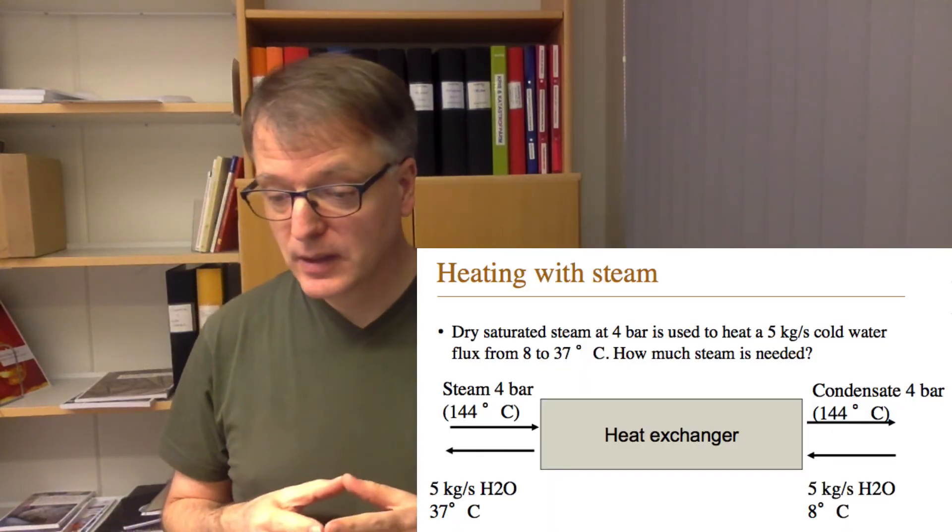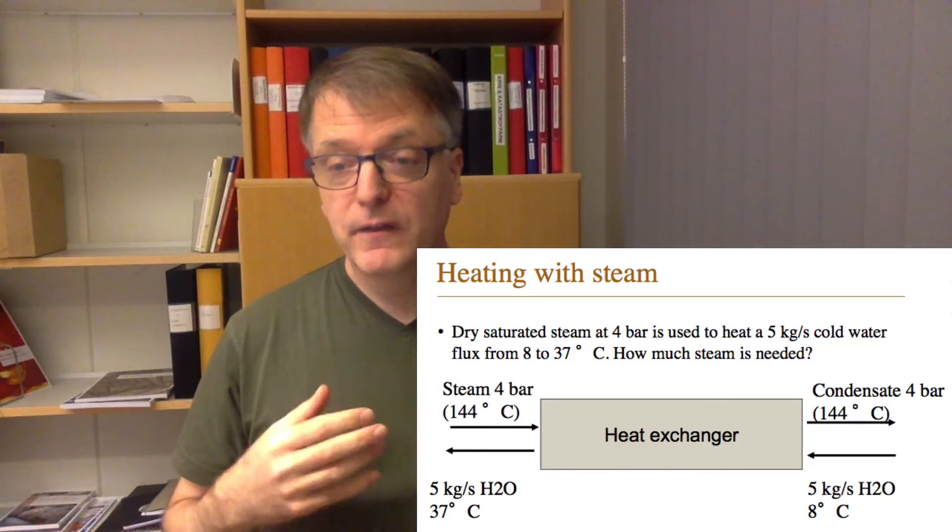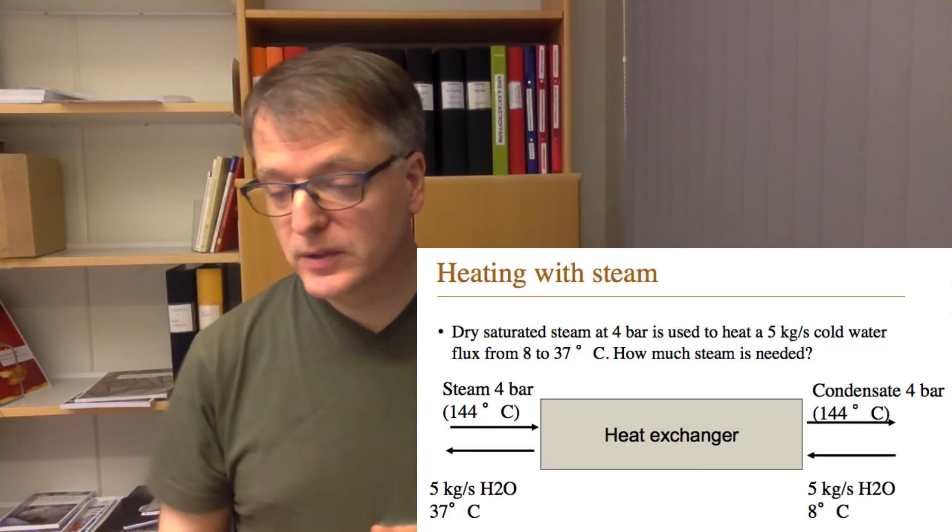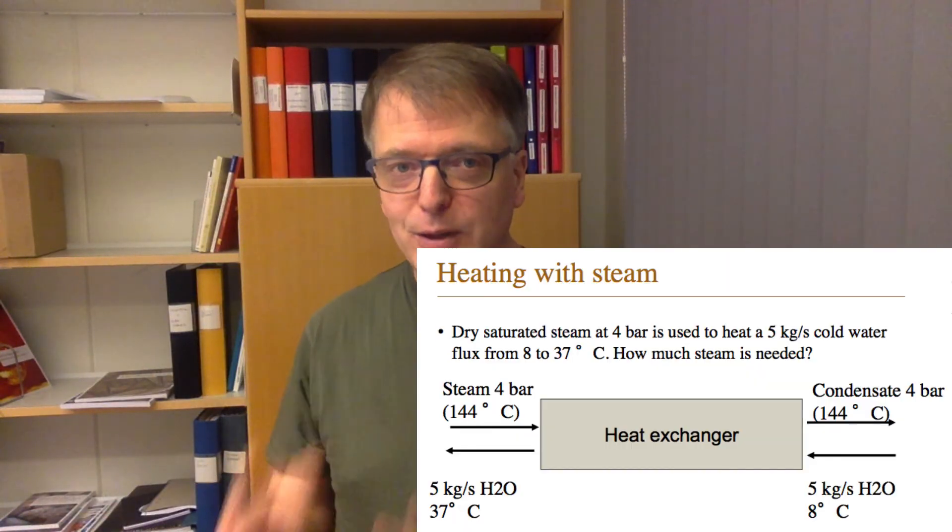Let's do a simple example. We have a heat exchanger where we have dry saturated steam at 4 bar which is used to heat 5 kilograms per second of cold water from 8 to 37 degrees. How much steam is needed? We will talk about heat exchangers later in the course, but we can actually solve the task without knowing anything about heat exchangers. Just looking at the streams and making an energy balance.